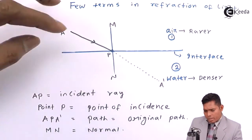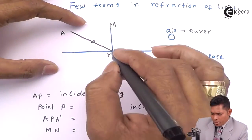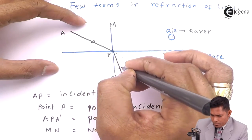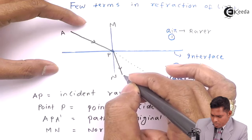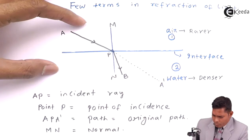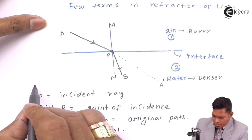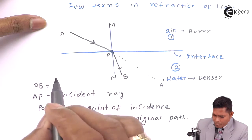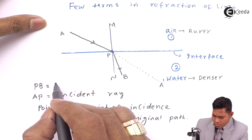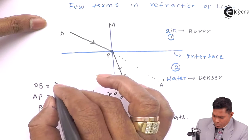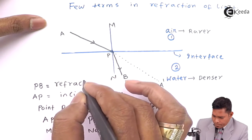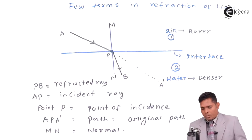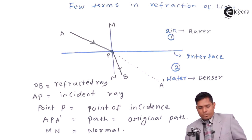In this case, going from air to water, the ray deviates from the original direction and bends towards the normal. Suppose this point is B, so PB is called the refracted ray.